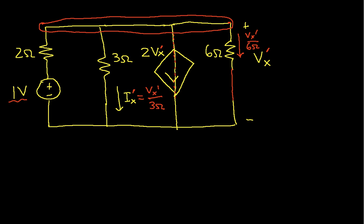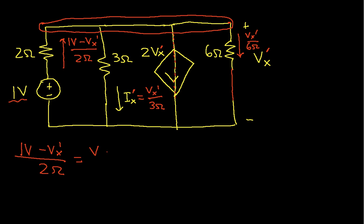We need to find the current entering the top node through the 2 ohm resistor, which is 1 volt minus Vx prime over 2 ohms. Using KCL, the sum of currents entering equals the sum leaving: (1 volt minus Vx prime) / 2 ohms = Vx prime / 3 ohms + 2 Vx prime + Vx prime / 6 ohms.